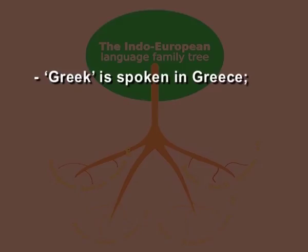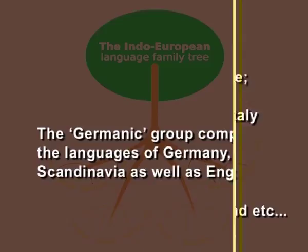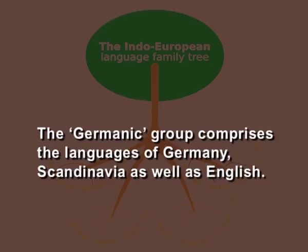Greek is spoken in Greece; Latin is the language of Italy and its neighbors; Celtic survives in ancient inscriptions and in the languages of Wales, Ireland, etc. The Germanic group comprises the languages of Germany, Scandinavia, as well as English. It is only with this last — the Germanic group — that we are here concerned.